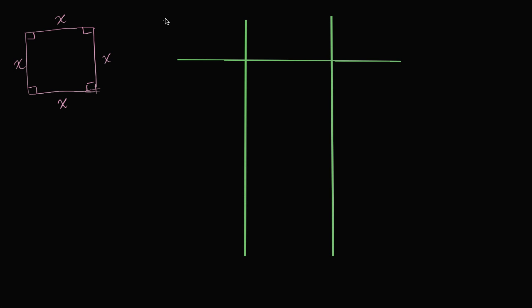We'll make three columns. On the first column, we're going to think about the side length — that's measured as x. And in the next column, I want to think about the perimeter.